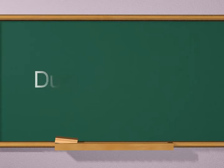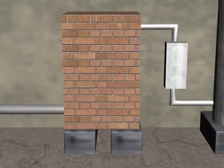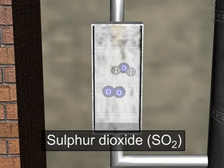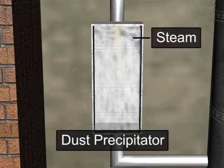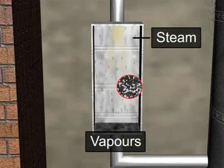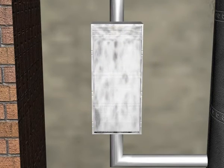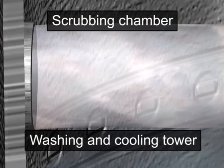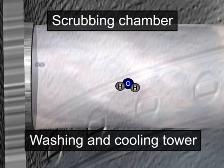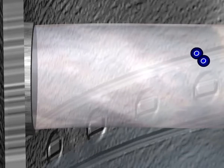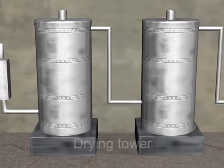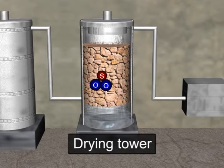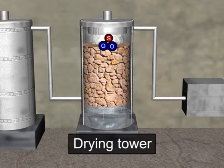Let us now learn about the dust precipitator. A mixture of sulfur dioxide and oxygen is passed through a dust precipitator, where steam is passed from above, vapors condense, and impurities settle down. In the scrubbing tower — also known as the washing and cooling tower — water is sprayed from above so that soluble impurities are removed, and wastewater is collected from the bottom. The moist gas is then passed through a drying tower, where the gas is dehydrated by spraying concentrated acid from the top and introducing gas from the bottom. The tower is filled with quartz, and waste acid is collected from the bottom.